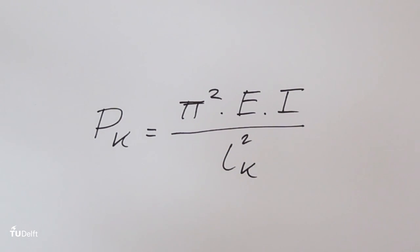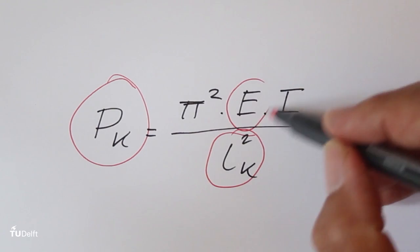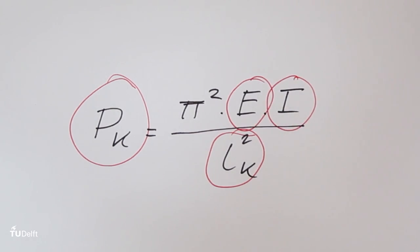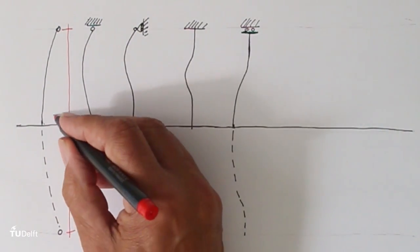Buckling is related to the buckling length of the element, Young's modulus, and moment of inertia. The buckling length is not the exact length of the element but depends on the way the element is connected on both sides.